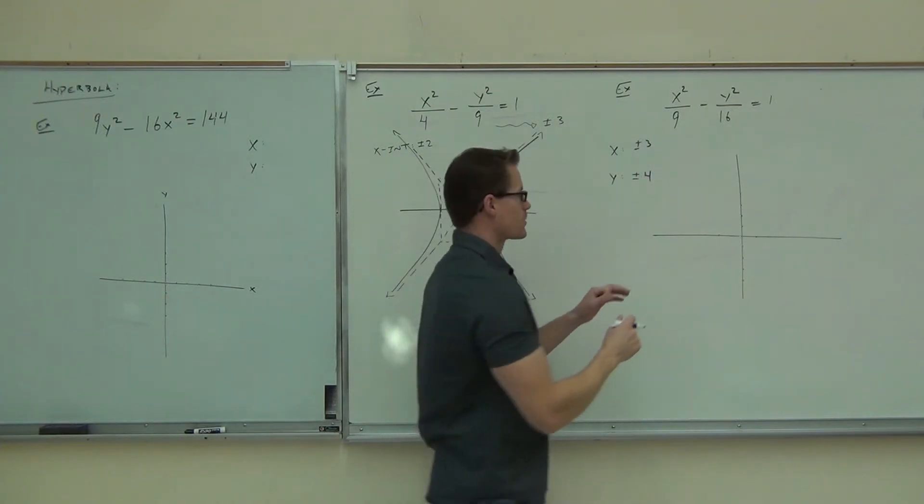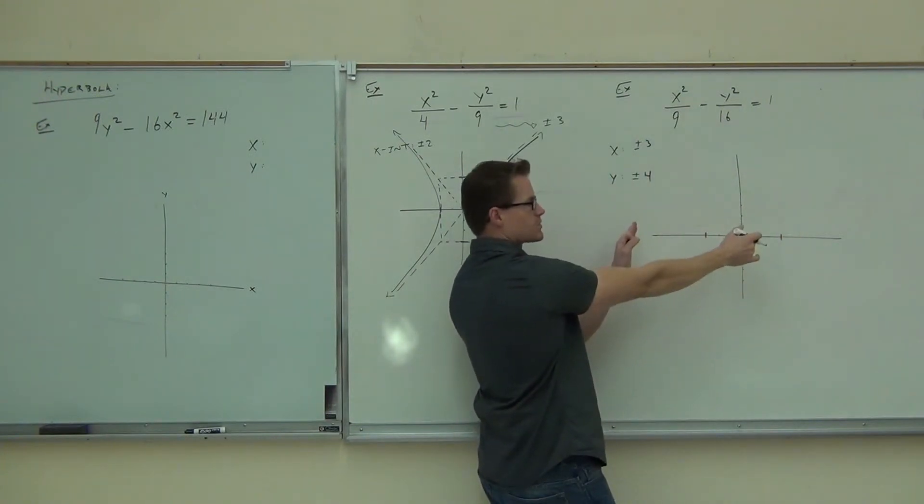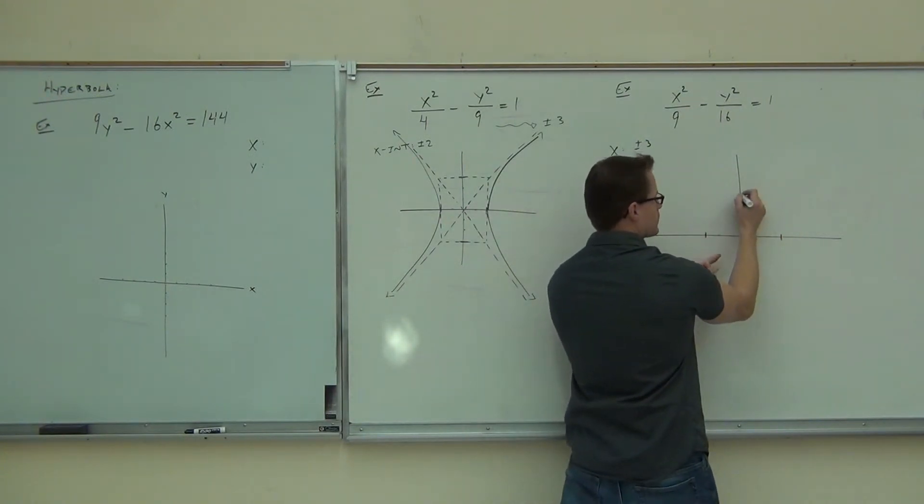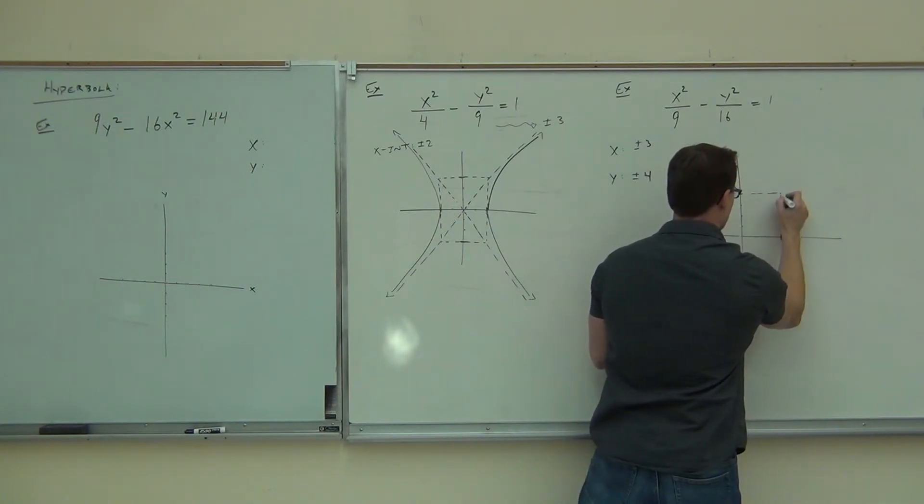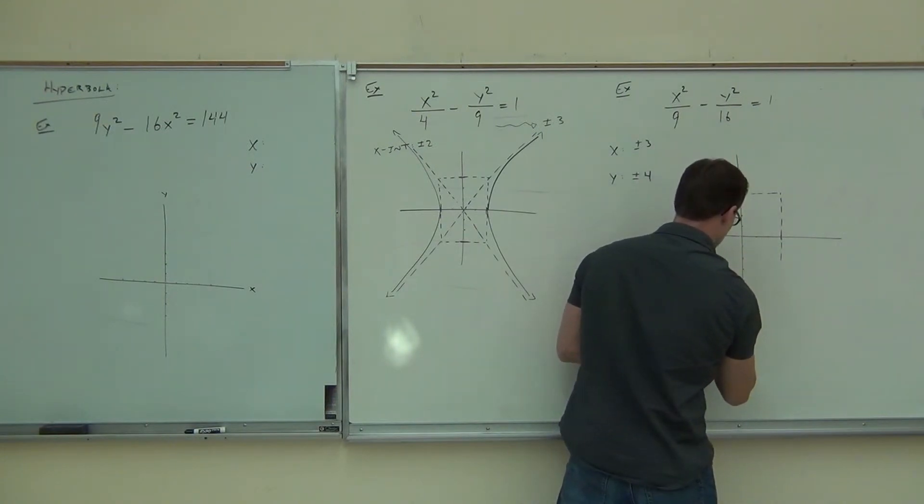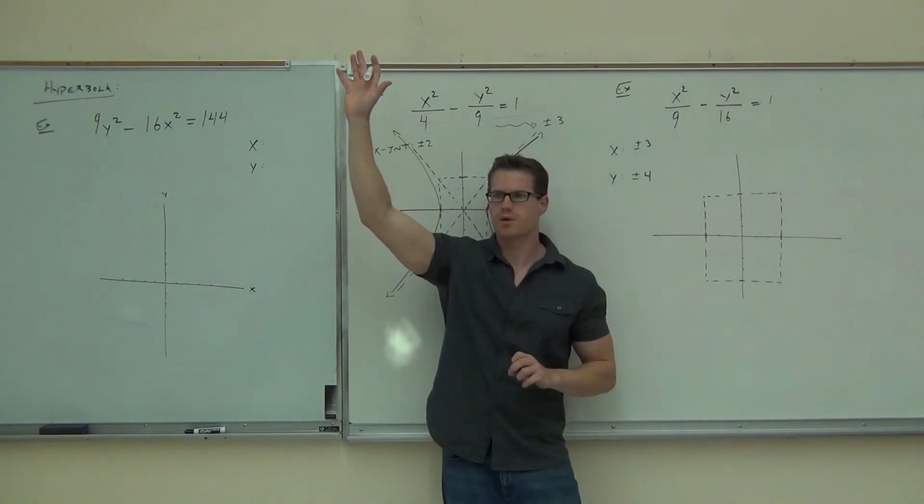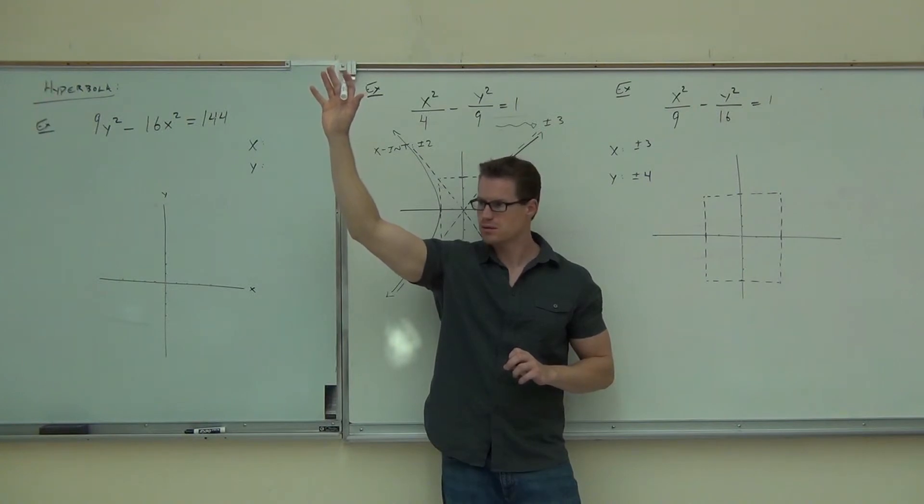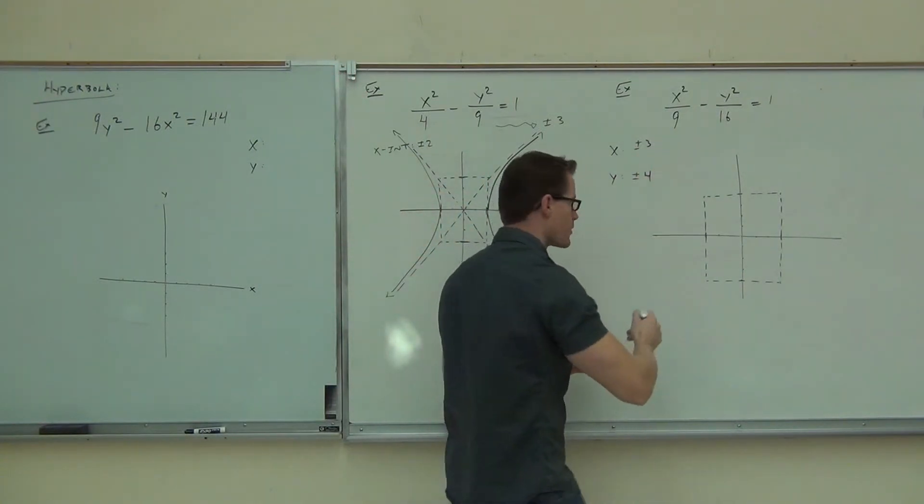So we're going to make a box around plus or minus x equals three and plus or minus four along our y. Which direction have you made it that far? You get that box and everything. All right. What do you do with that box? How does it help us? Cross hairs. That's right. Make the x through the corners of our box.